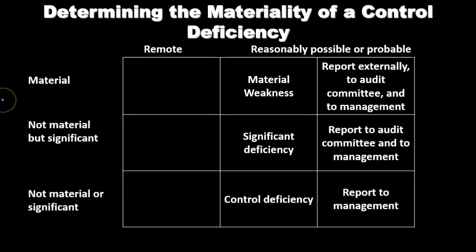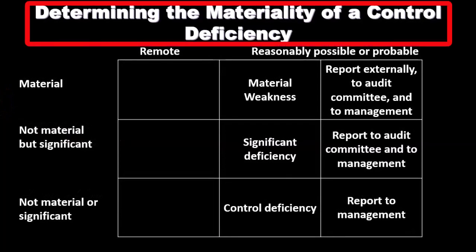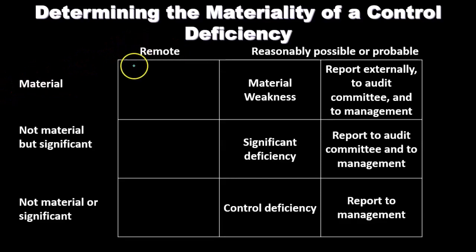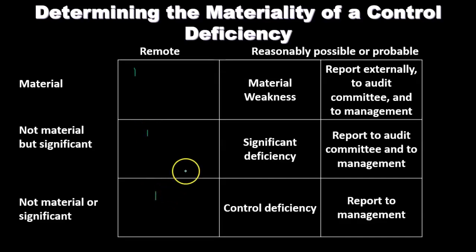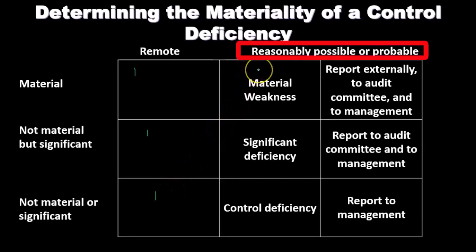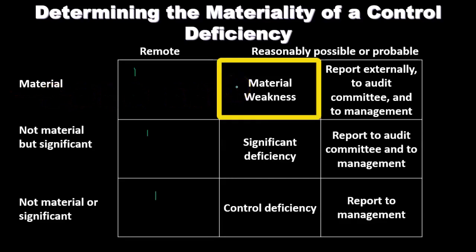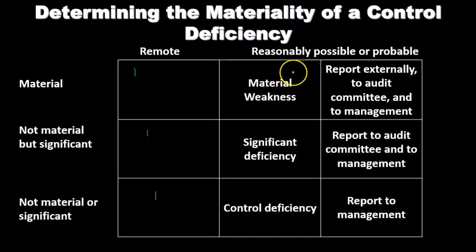Here's a table to think about what action should be taken and what type of communication is required. If the likelihood is remote, regardless of whether the impact would be material, no action is taken. If it's reasonably possible or probable and material, then we have a material weakness — which is severe — and we report it externally to the audit committee and to management.